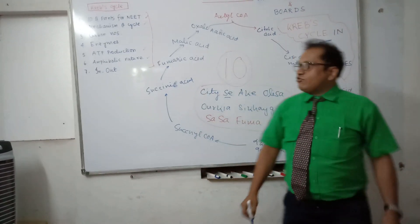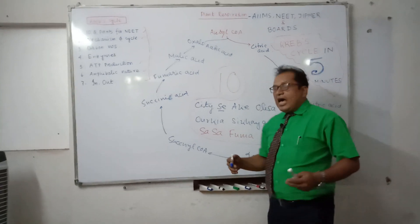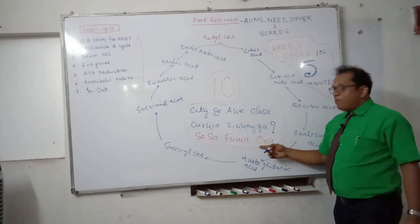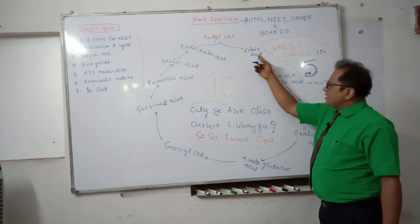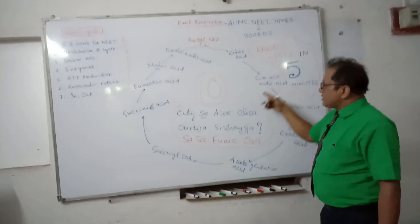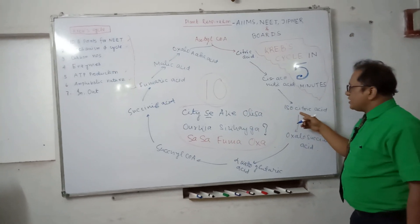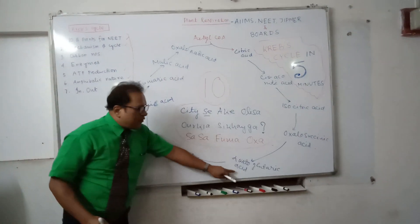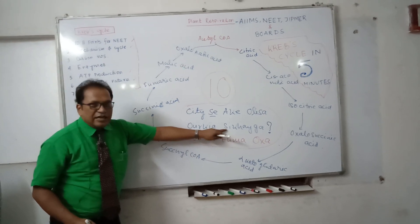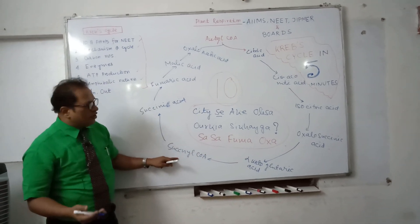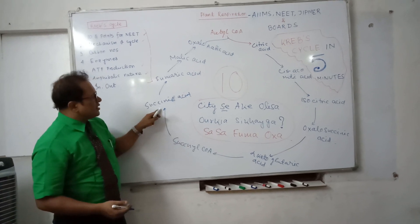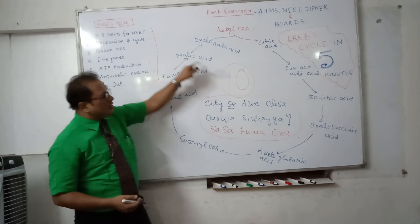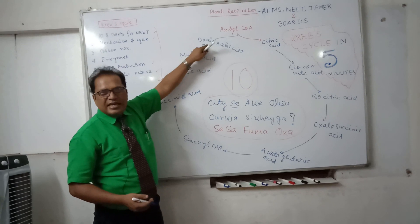Continuing the mnemonic: 'Sasa fume ma auxa.' 'Sasa' means succinic acid, 'fume' means fumaric acid, 'ma' means malic acid, and 'auxa' means oxalo-acetic acid. So the full mnemonic is: City se ake, Olisa, aur kya sikhayega? Sasa, fume, ma, auxa. These map to: citric acid, cis-aconitic acid, iso-citric acid, oxalo-succinic acid, alpha-keto-glutaric acid, succinyl coenzyme A, succinic acid, fumaric acid, malic acid, and oxalo-acetic acid.